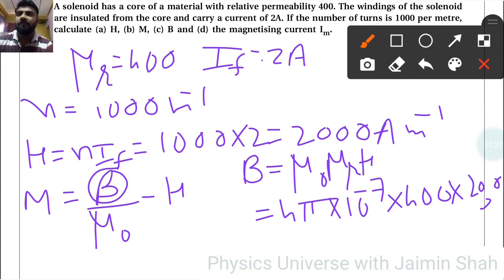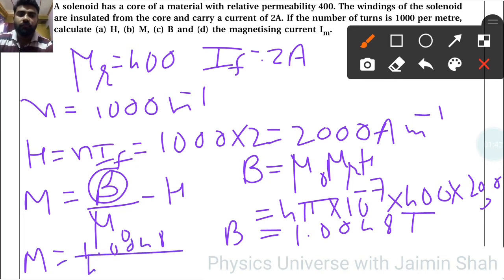That is 1.0048, so B = 1.0048 T. Now we found B, so we can easily find M also. 1.0048 divided by 4π × 10⁻⁷ minus H.